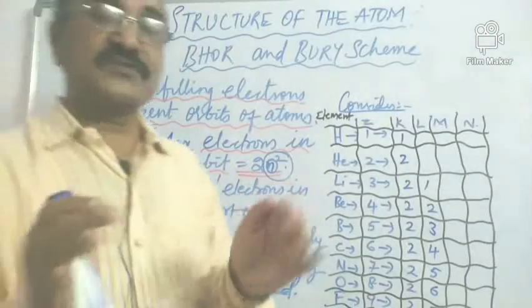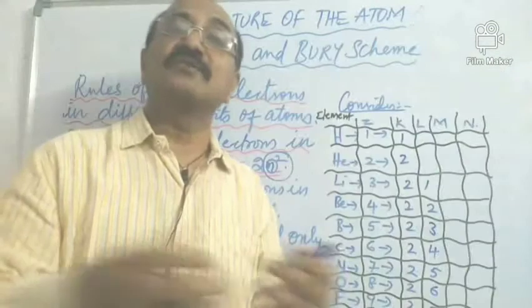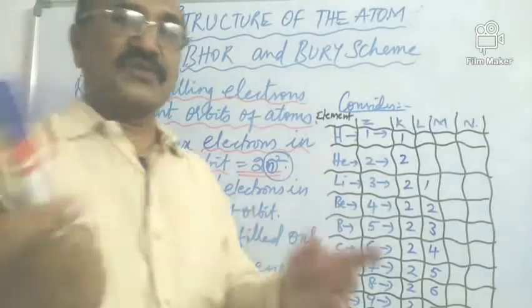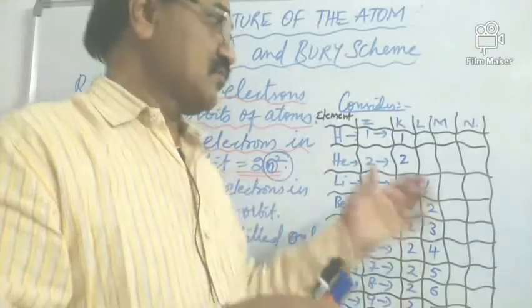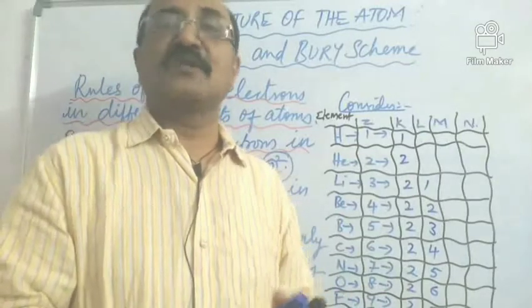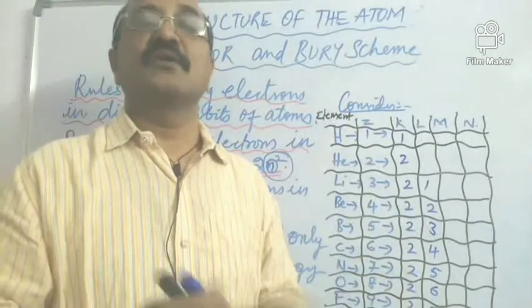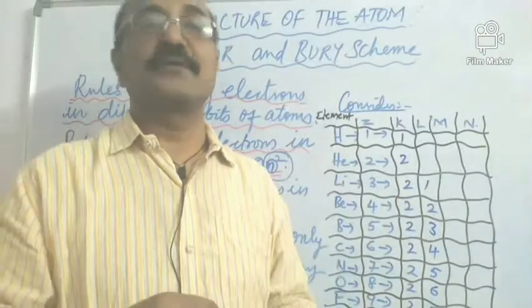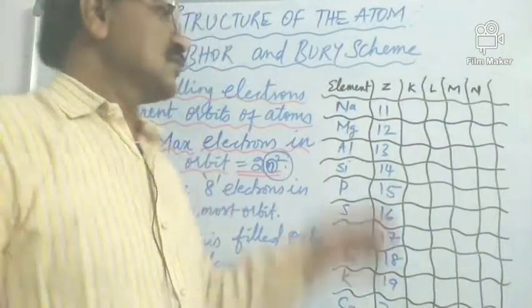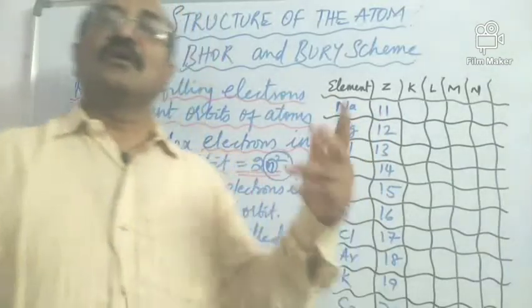You can see something special in potassium and calcium — something different there. That is because of the second rule, which we will now learn. We are back to understand the next elements in order. To understand the second rule, we need to continue writing electronic configurations beyond neon and see how it plays a role in filling electrons in the different orbits.